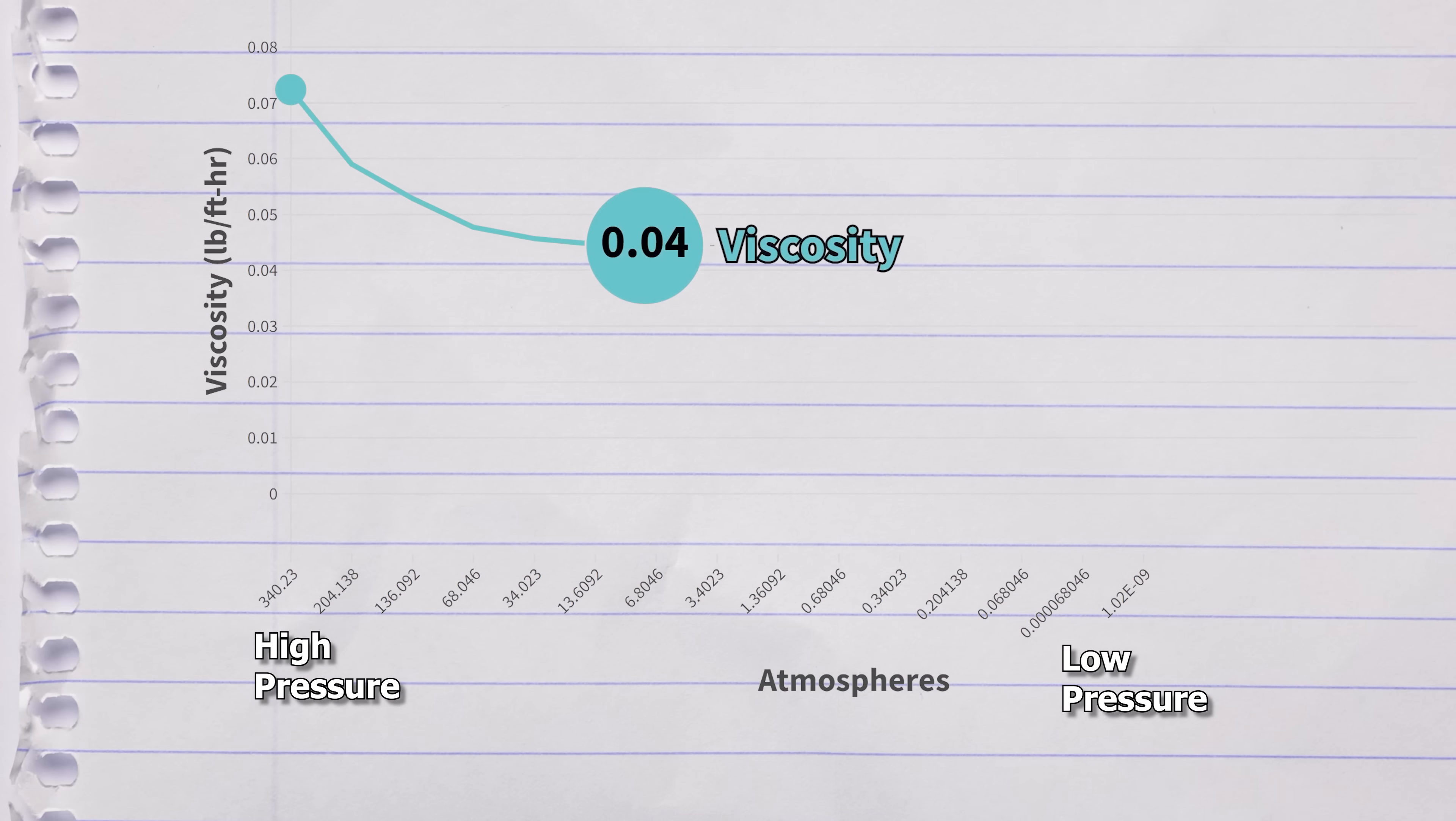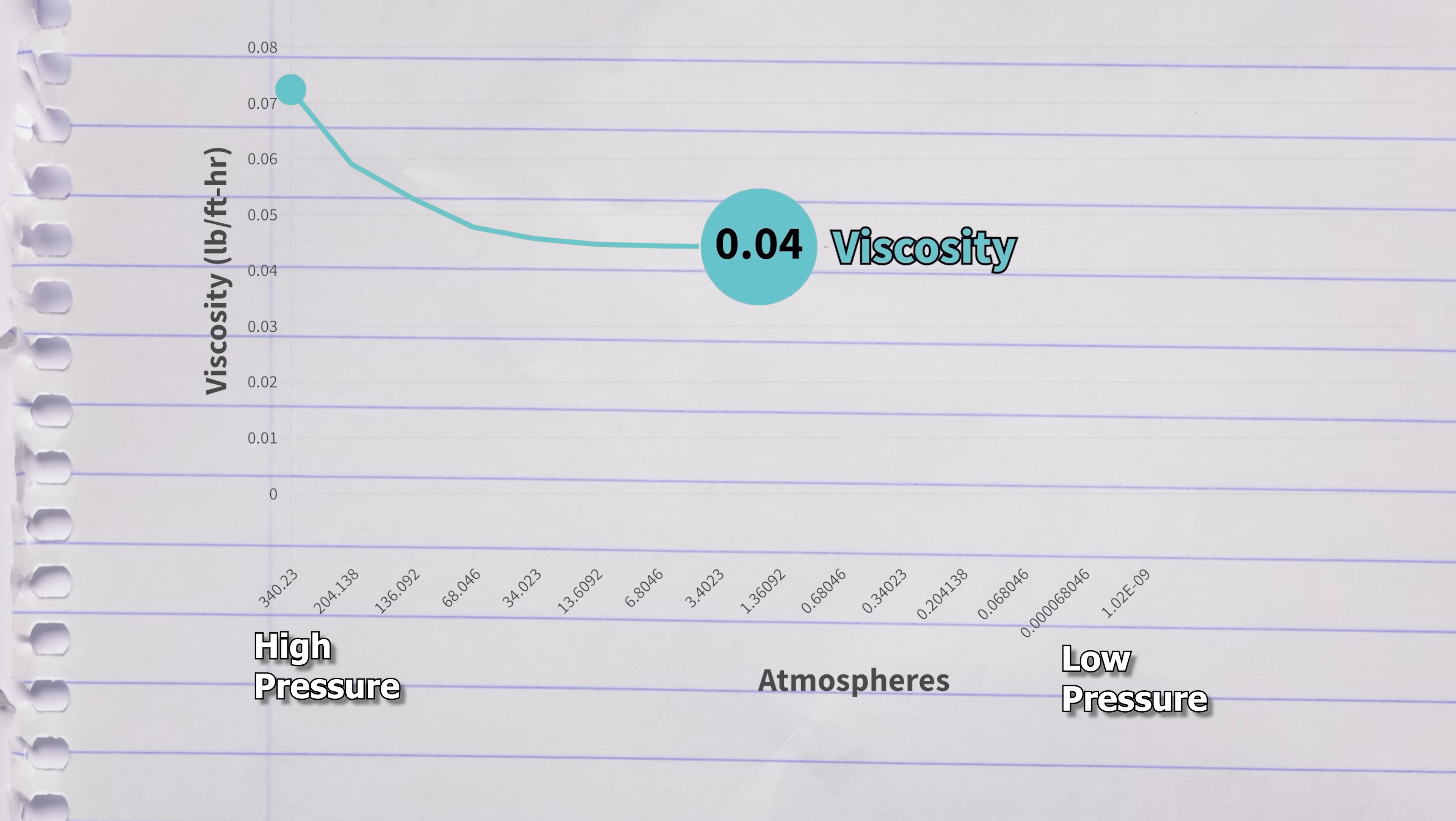Once we're below about 50 atmospheres, the viscosity starts to flatten out, and it stays about the same all the way until we reach extremely low pressures. It bottoms out here at about 0.0441. That means that the air's resistance to flow is the same, even though its density is orders of magnitude less.